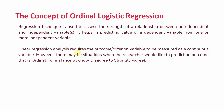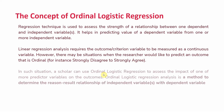Linear regression analysis requires the outcome or criterion variable to be measured as a continuous variable. However, there may be situations when the researcher would like to predict an outcome that is ordinal — that is, on a Likert scale from strongly disagree to strongly agree. In such situations, you will need Ordinal Logistic Regression to assess the impact of one or more predictor variables on the outcome.